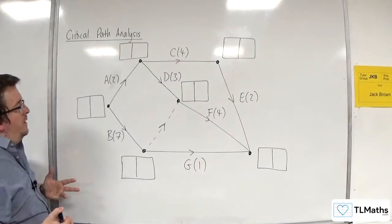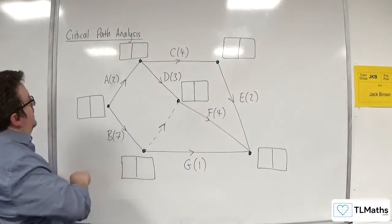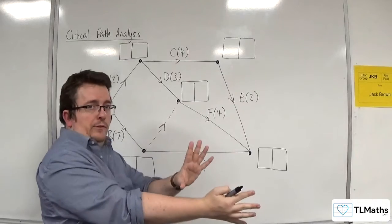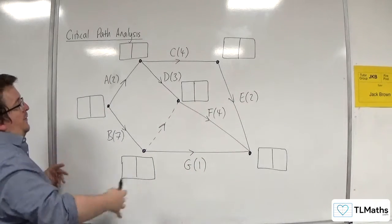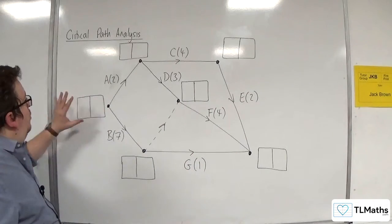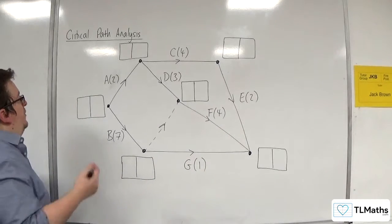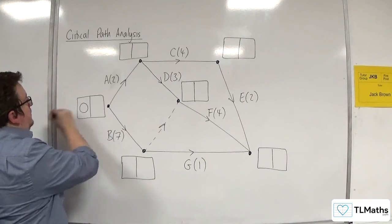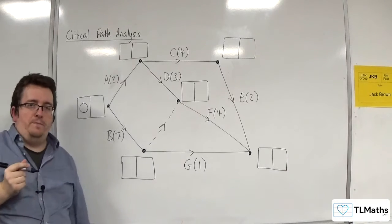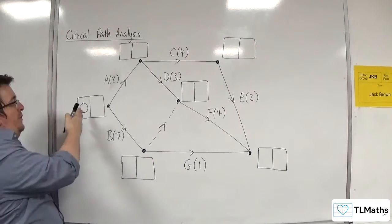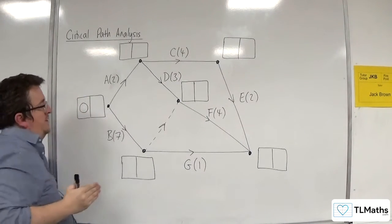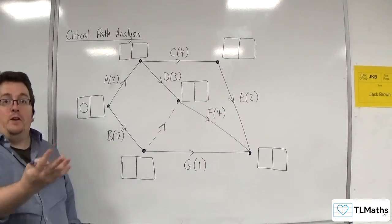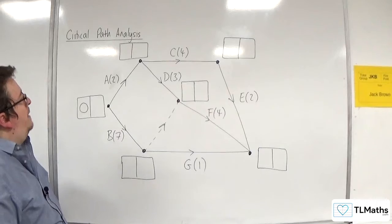That's what we want to do. So what we do first of all is what's referred to as the forward pass. The forward pass allows us to fill in all of the left hand boxes. So we're going to start off here at the source, and we start off with zero. Now, we start off with zero because at this event, the earliest time we can start there is at zero. Zero time has elapsed.